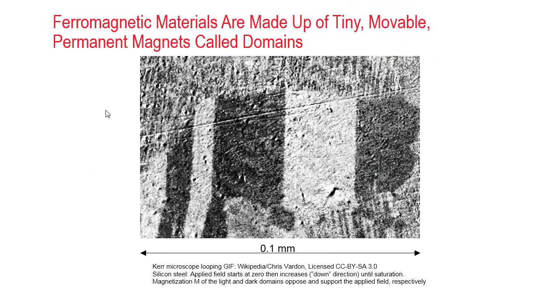It's helpful to review the cause of the saturation hysteresis effect in ferromagnetic materials. Ferromagnetic materials are made up of tiny permanent magnets called domains. You can actually visualize the domains using a special microscope called a Kerr microscope that uses the interaction of polarized light and surface magnetism, the Kerr effect, to visualize the magnetic domains.